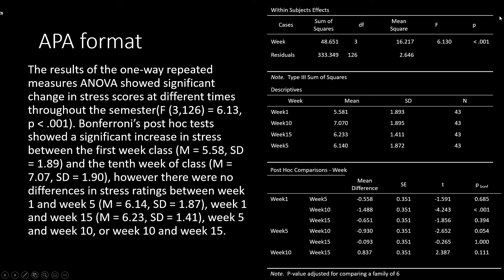In the second example we had a significant ANOVA, so I wrote a sentence that conveyed that information to the reader: the results of the one-way repeated measures ANOVA showed a significant change in stress scores at different times throughout the semester. I entered my F symbol, degrees of freedom between and within, my F value, and my P value. Because my ANOVA was significant, I conducted Bonferroni's post-hoc tests. I found a significant difference between week 1 scores and week 10 scores, but no other differences.